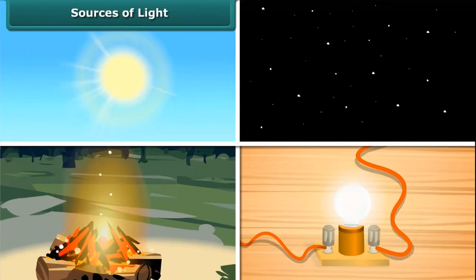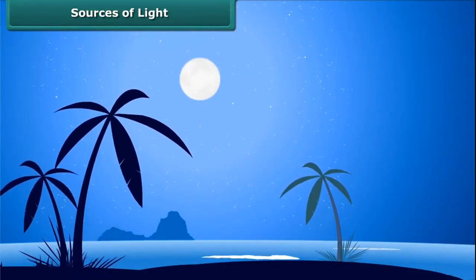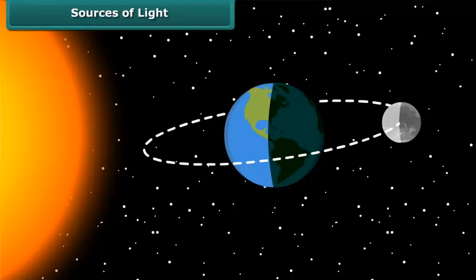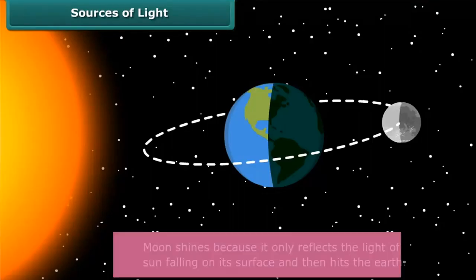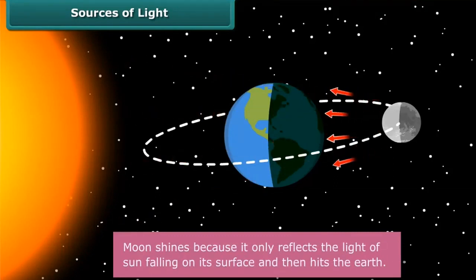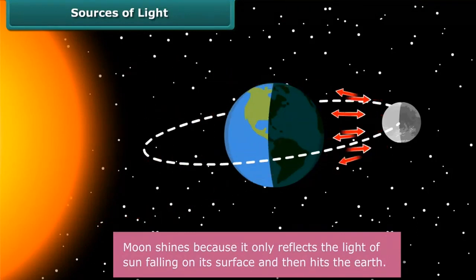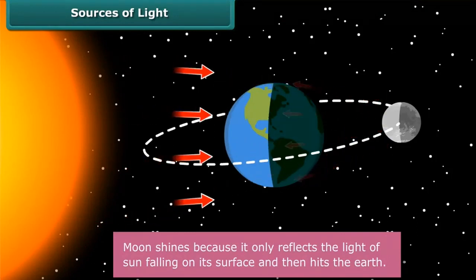But wait, not all things that shine are light sources. Moon is not a natural source of light. It does not have its own light. It only reflects the light of the sun falling on its surface and then hits the earth, due to which it appears shiny when seen from earth.